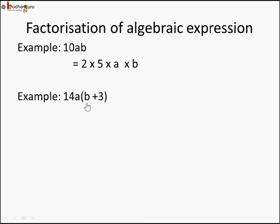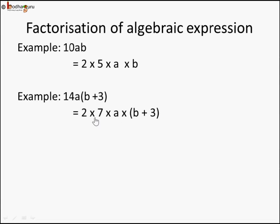Let's take another example: the algebraic expression 14a(b + 3). We try to reduce 14a into its factors. So 14 is 2 into 7, and a is just a. So the factorization is 2 into 7 into a into (b + 3) — remember to put the brackets, children. This is a product of constants 2 and 7, variable a, and the expression (b + 3). All we need to do is break down each constant into its irreducible factors and the same for variables.